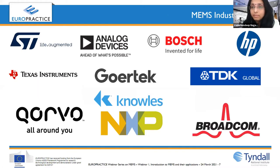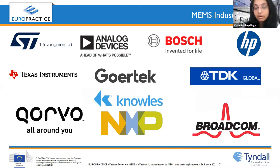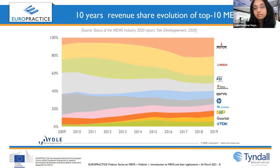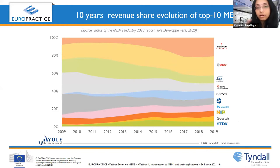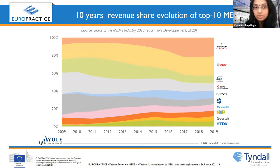Looking at the market share of MEMS industry players: there are STMicroelectronics, Analog Devices, Broadcom — who have come up very recently and now hold a very big market share — NXP, and others in the RF domain. RF MEMS is coming up very fast in the market. Bosch and ST Microelectronics each have their own niche applications. Other than these world leaders, there are many SMEs and startups coming into picture, and from Europractice we would like to provide services to both academic researchers and SMEs.